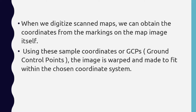When you make markings on the map, you get some sample coordinates which are called Ground Control Points, or GCPs. When we select the points, we get those GCPs and a table of GCPs is generated. Using these GCPs, your image is warped — warped means reformed — and made to fit whatever the chosen coordinate system is.